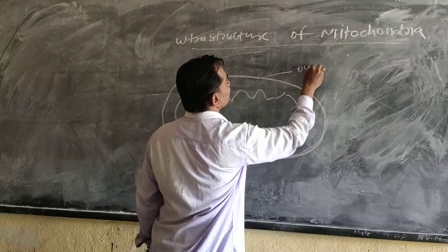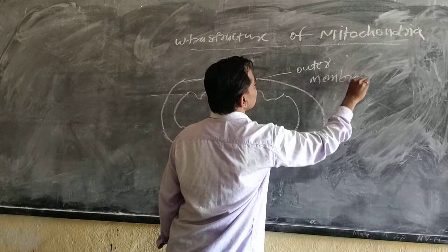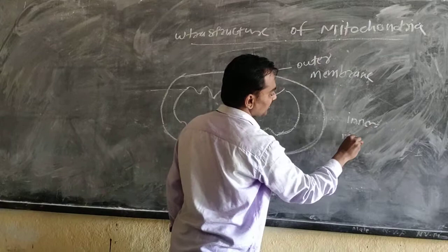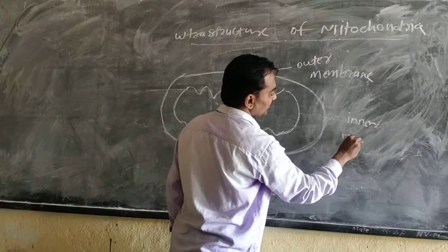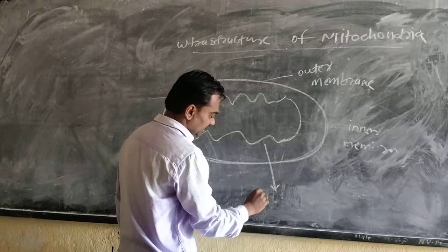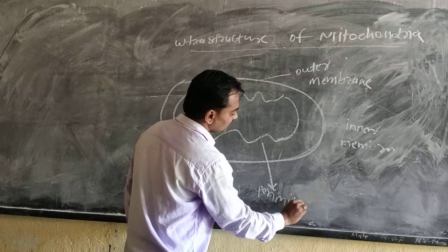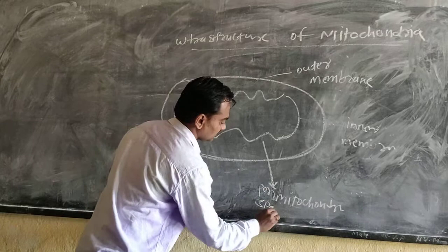Mitochondria is a double membrane structure. It consists of two membranes: an outer membrane and an inner membrane. The space between the two membranes is called the perimtochondrial space. The infolding of the inner membrane forms a finger-like projection, which we call cristae.